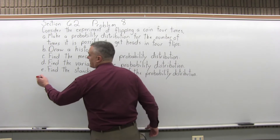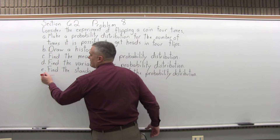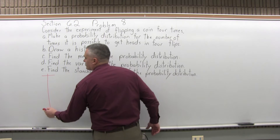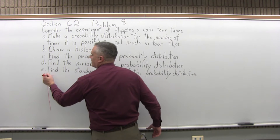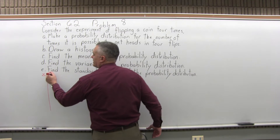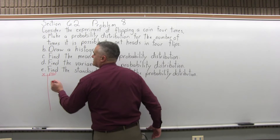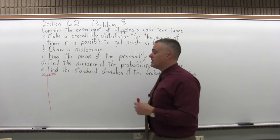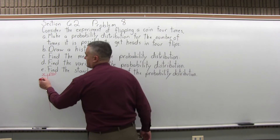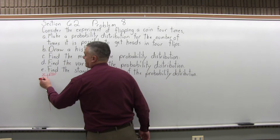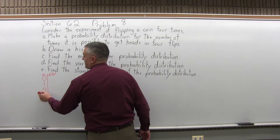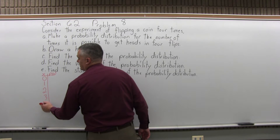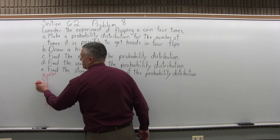So for Part A, we're going to have our chart with two columns. There'll be x for one column, and P(x), which you would read as probability of x, for the second column. If you flip a coin four times, you might not get heads at all, you might get heads once, get heads twice, get heads three times, or get heads all four times.